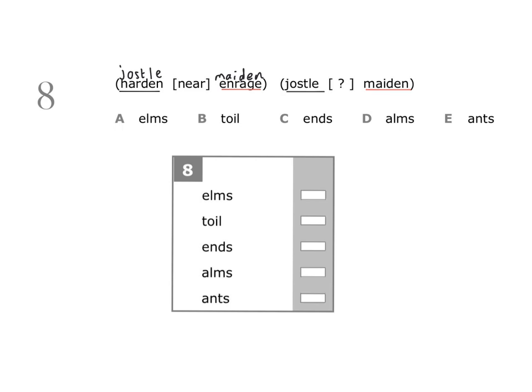By doing this you can see clearly which letter from the first group corresponds to which letter in the second group. Looking at the word 'near': it starts with an N. There's an N at the end of 'harden' which corresponds to the E at the end of 'jostle'. There's an N in 'enrage' which corresponds to the A in 'maiden'. So our missing word starts with either E or A.